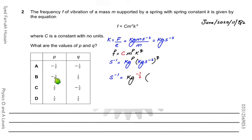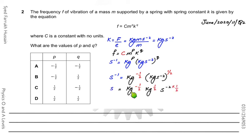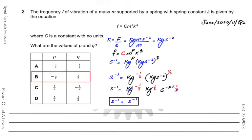According to option B, P is minus half and Q is positive half. Substituting: kg^(−½) × (kg·s⁻²)^(½) gives kg^(−½) × kg^(+½) × s^(−1). The kg terms cancel, leaving s⁻¹. The units on the left-hand side and right-hand side are the same, which means option B is correct.